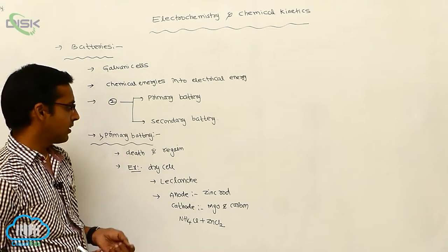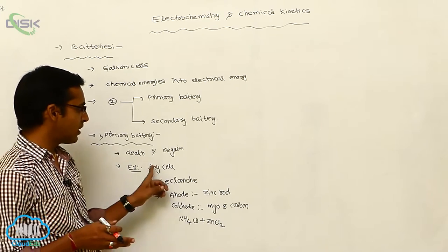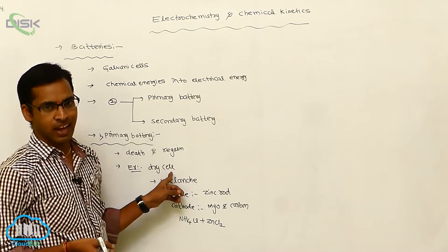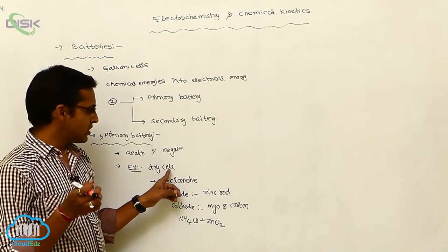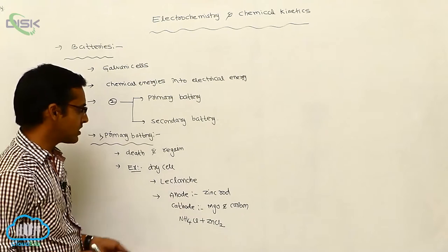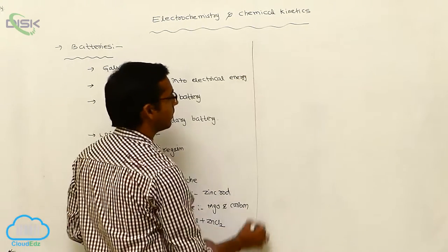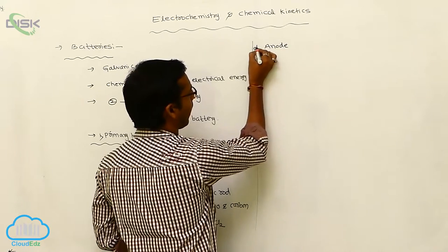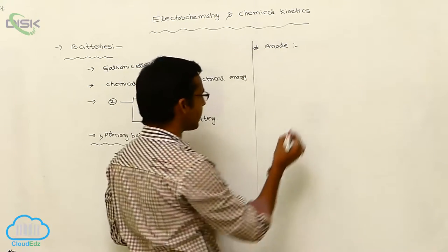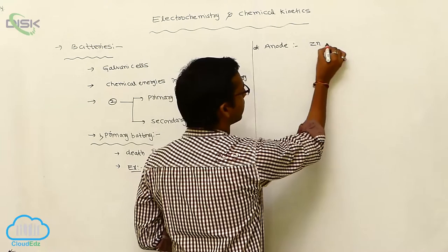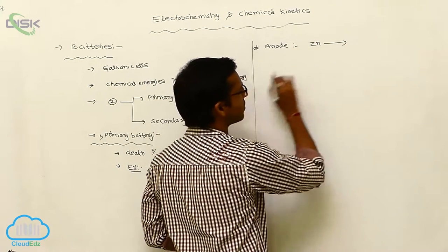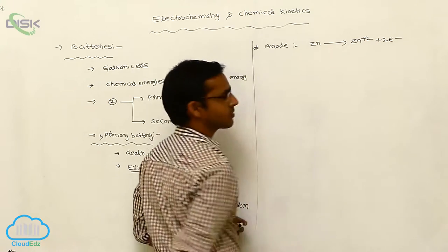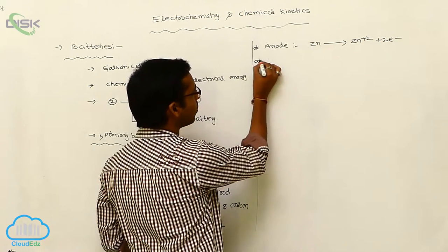The chemical reaction in the dry cell is complex and difficult to represent, but in a simple way: at the anode, zinc undergoes oxidation — losing two electrons — producing Zn²⁺ plus 2 electrons.